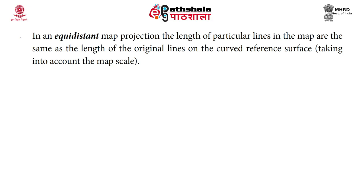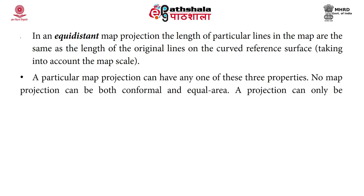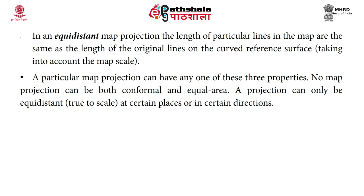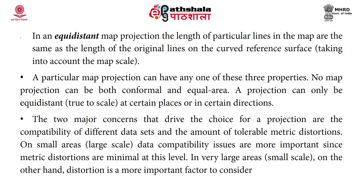In an equidistant map projection, the length of particular lines on the map are the same as the length of the original lines on the curved reference surface, taking into account the map scale. No map projection can be both conformal and equal area; a projection can only be equidistant — true to scale — at certain places or in certain directions. The two major concerns driving the choice of projection are the compatibility of different data sets and the amount of tolerable metric distortion. On small areas, data compatibility is more important; on very large areas, distortion is the more important factor to consider.